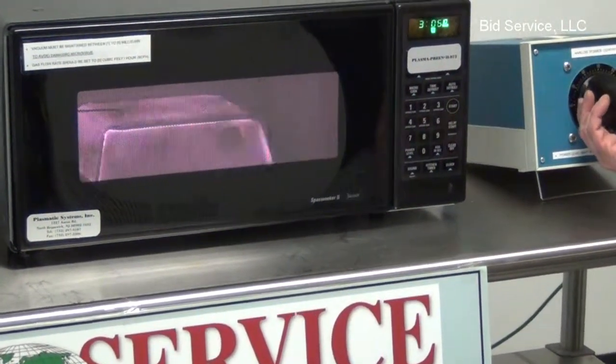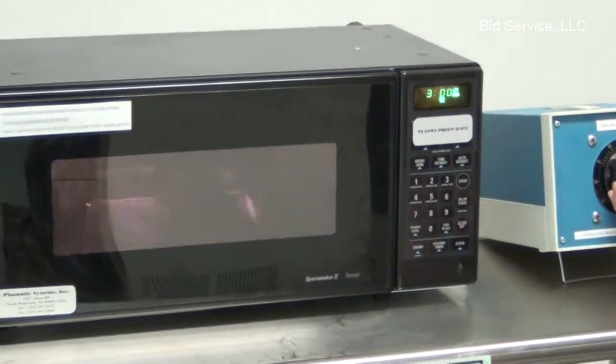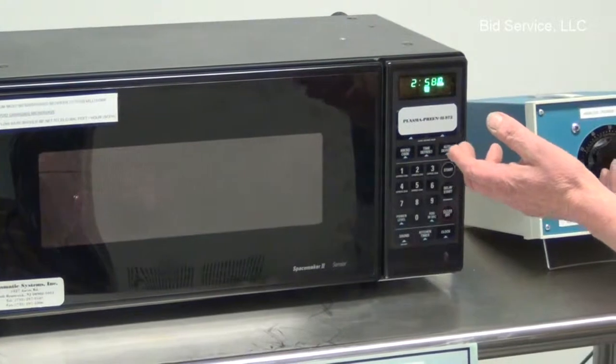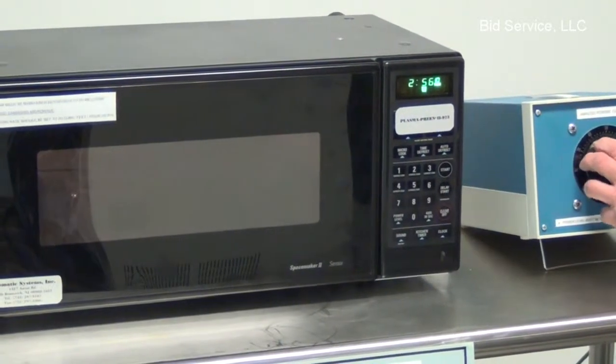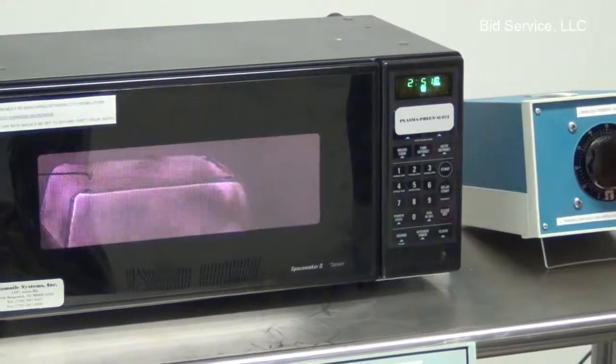So if we start to turn it off and we get past 70%, we'll start to lose our plasma. But between 70 and 100% is a normal operating range.